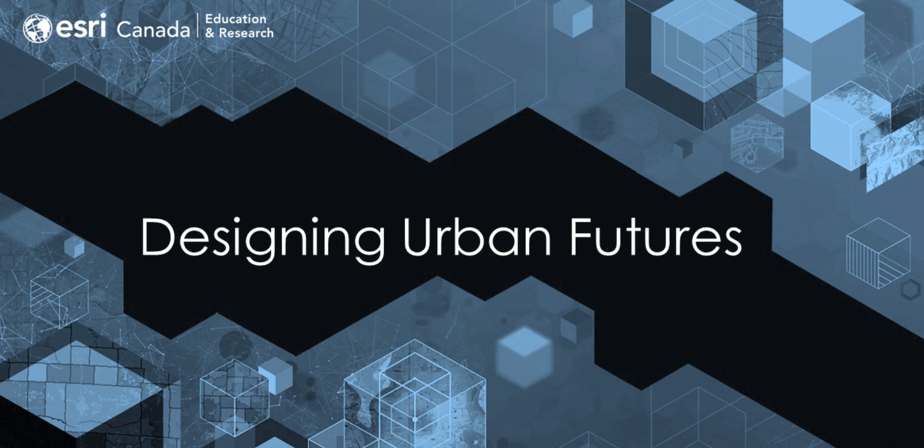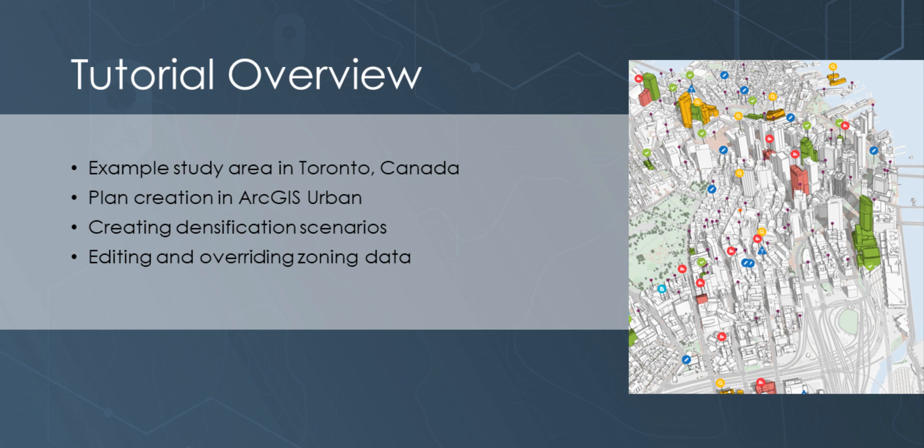Welcome to the Designing Digital Futures in ArcGIS Urban Tutorial. In this tutorial, we will look at ways to implement a design plan in an urban area of Toronto, Canada. The City of Toronto is the most populous city in Canada and is part of the Greater Toronto Area, which currently has a population of around 7 million people, with a projected increase of over a million people by 2030. The city and the surrounding region needs to find ways to plan for this growth.